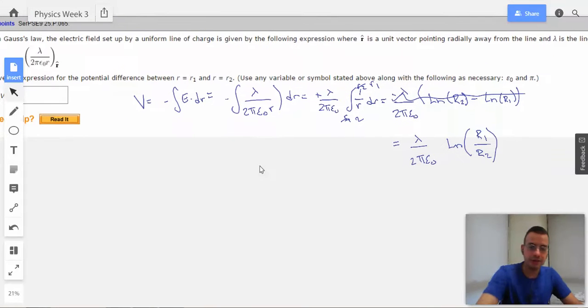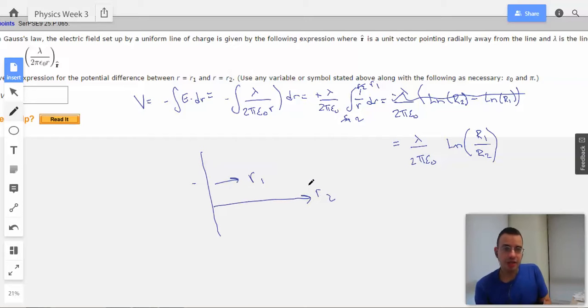So now let's look at this guy real quick. So we have a line, we have R1. I'm going to say R1 is smaller, I'm going to say R2 is bigger, and let's say we have a positive linear charge density.